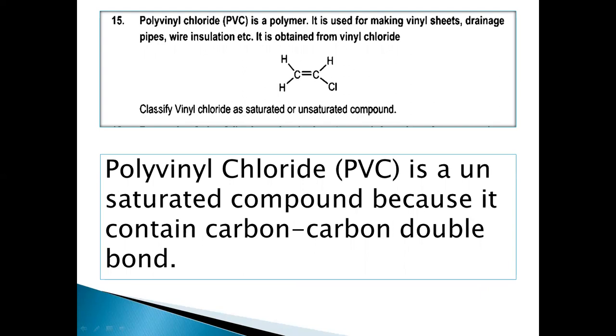Now, let's tell you that vinyl chloride is saturated or unsaturated. We call it saturated, which includes single bond, no double bond or triple bond. We call it unsaturated, which includes double or triple bond. So, in this case, polyvinyl chloride will be considered unsaturated.